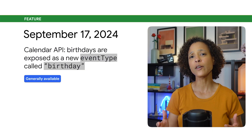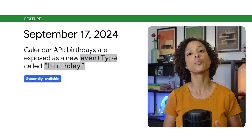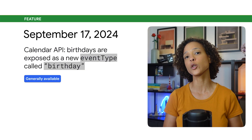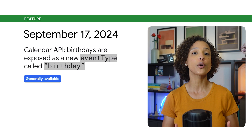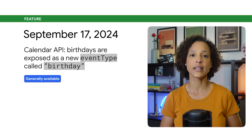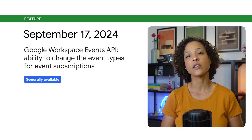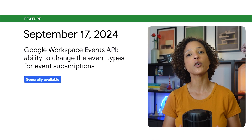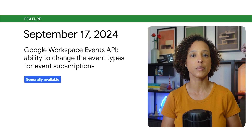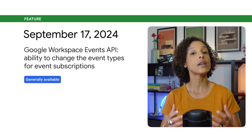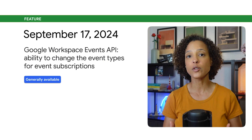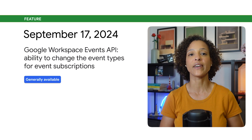The Google Calendar API now allows you to programmatically create and manage birthdays through the new event type Birthday. For existing event subscriptions you have created through the Google Workspace Events API, you can now change the event types you want to receive events for.